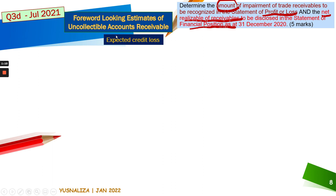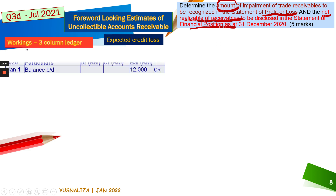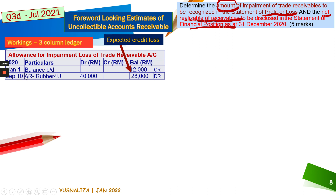In our case the expected credit loss has already been determined in the previous video. Here I have provided a three-column ledger where, if you recall, on 1st January 2020 the beginning balance of the estimates of uncollectable accounts receivable in the allowance was 12,000. These are the beginning balances given at the start of the year.